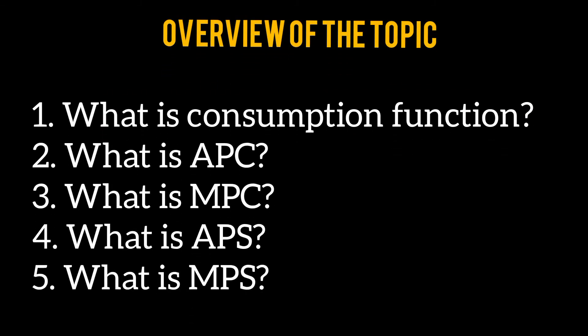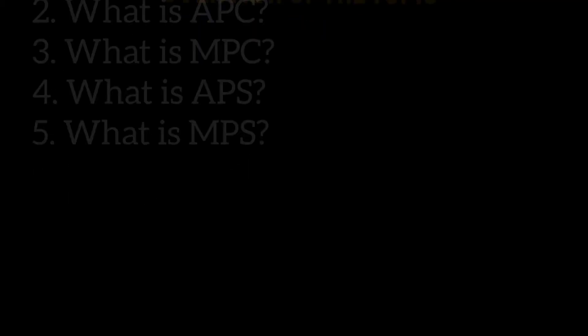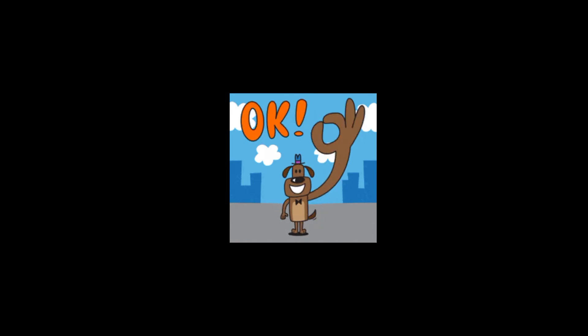In this video we will discuss about the consumption function. Overview of the topic: number one, what is consumption function; number two, what is average propensity to consume; number three, what is marginal propensity to consume; number four, what is average propensity to save; and number five, what is marginal propensity to save.